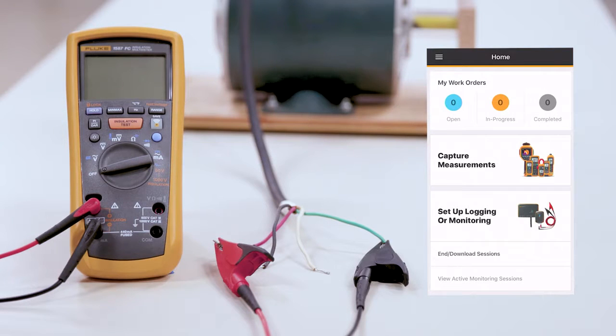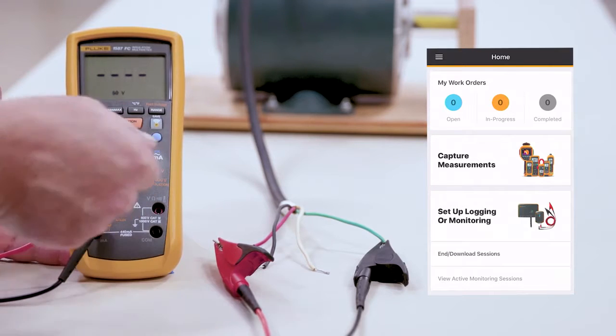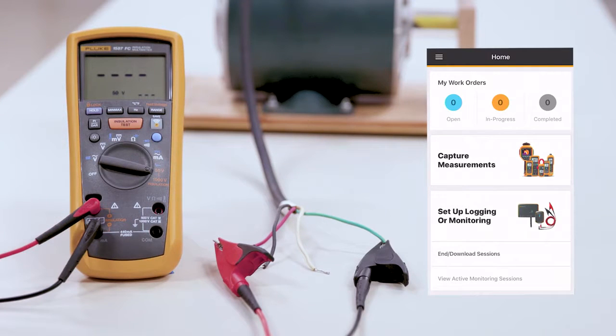At this point, we want to turn the meter on all the way to the far right in the orange for our insulation test.